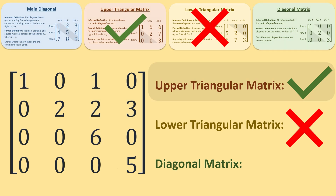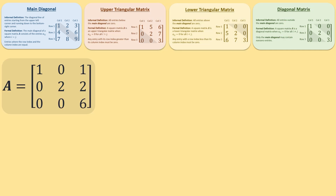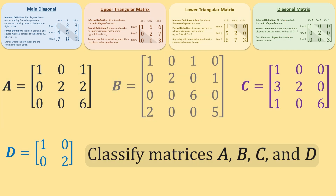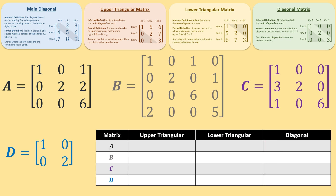We know it's not going to be a diagonal matrix since it is not both upper and lower triangular. Here are four square matrices. Take a moment to determine if they are upper triangular, lower triangular, or diagonal matrices. Feel free to pause the video to classify them on your own.